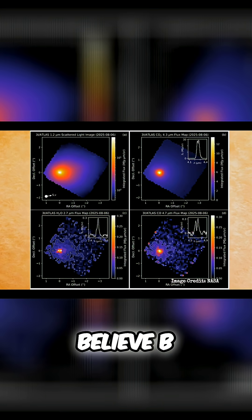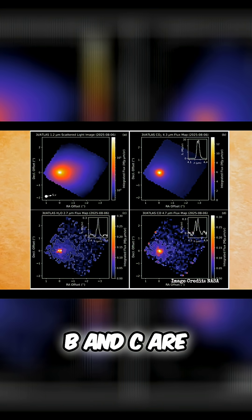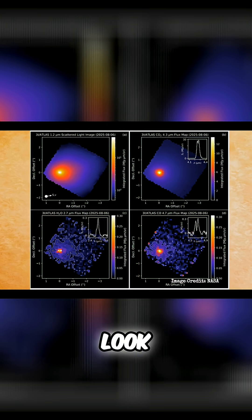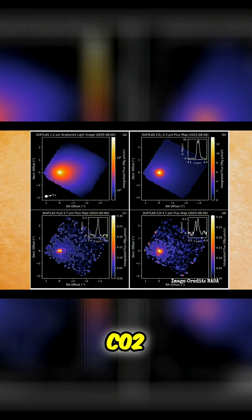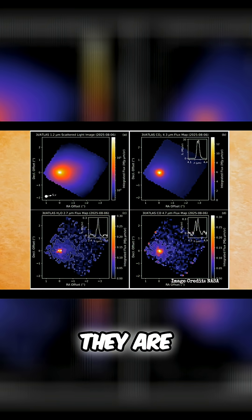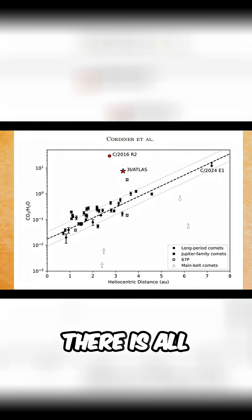And then I believe B, C, and D are looking at H2O, CO2, and CO and looking at how they are basically coming off of this. And what you'll notice on there is all these other comets that are native to the solar system, they fall along that line.